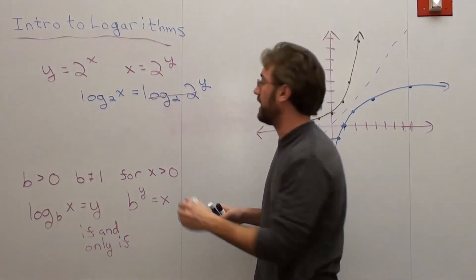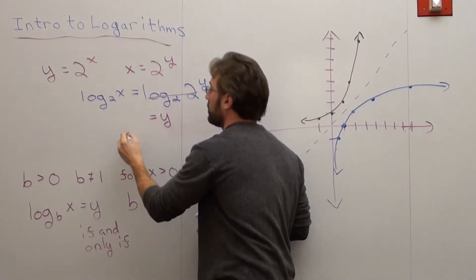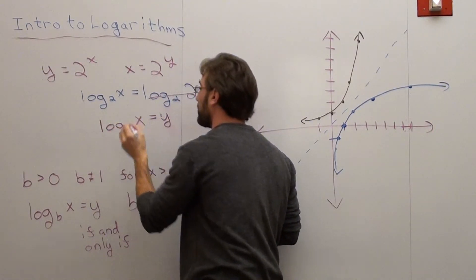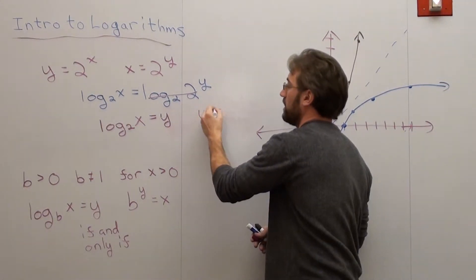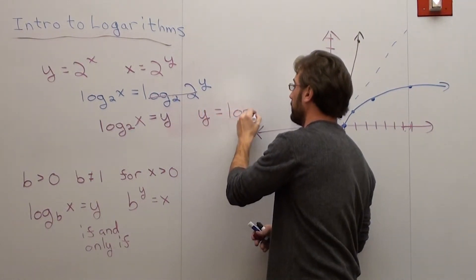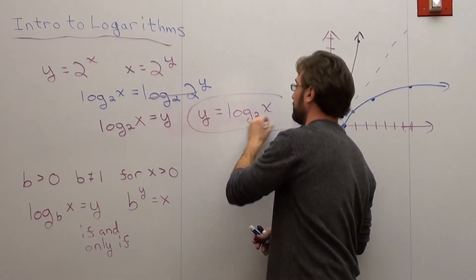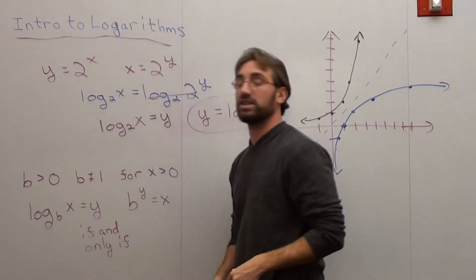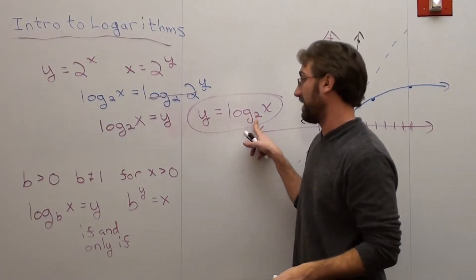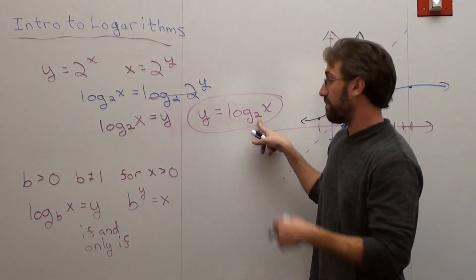That becomes 1, or just 1y, or just y equals log base 2 of x. Now, if I want to write it really properly, it would be y equals log base 2 of x. And there you go. That's your stipulation. Your base has to be greater than 0. It can't equal 1. And what I mean by that is, right here,